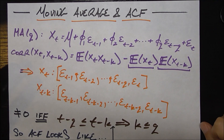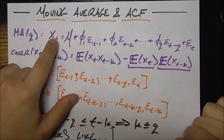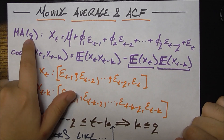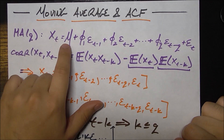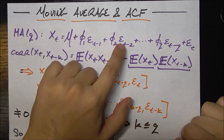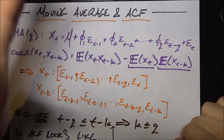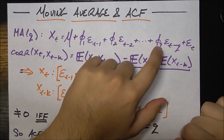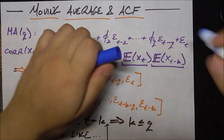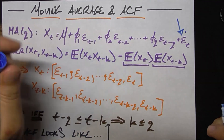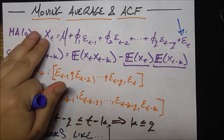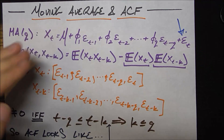Let's pretend that x_t is indeed generated by a moving average Q process. That is, x_t is equal to some mu plus phi_1 times the error from the previous time period, plus phi_2 times the error from two previous time periods, all the way to phi_q times the error from q time periods ago, plus the error from the current time period. So let's say that the data generating process for our time series x_t is indeed this moving average Q process.